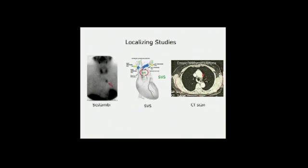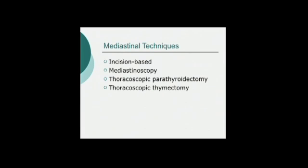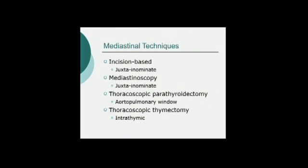Prior to embarking on mediastinal parathyroidectomy, you want to make sure you exquisitely localize where your parathyroid gland is — either with sestamibi, selective venous sampling, or CT scan. Mediastinal parathyroid glands can be juxta-innominate (just above, at the level of, or just below the innominate vein), in the aortopulmonary window, or squarely in the thymus itself. For juxta-innominate parathyroid glands, incision-based or mediastinoscopy-based parathyroidectomies are excellent. For the aortopulmonary window, thoracoscopic or directed parathyroidectomy is great. For intrathymic parathyroids, thoracoscopic thymectomy is a wonderful technique.